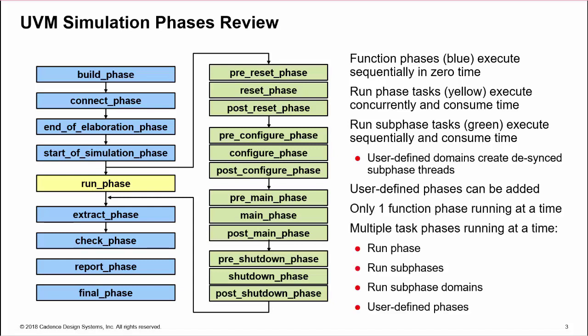So for function phases, there is only one phase running at a time. But for task phases, there can be multiple different phases running simultaneously. We can have run_phase, a run sub-phase, run sub-phases from different domains, and possibly user-defined phases. This can obviously affect the use of simulation phase callbacks and hook methods.